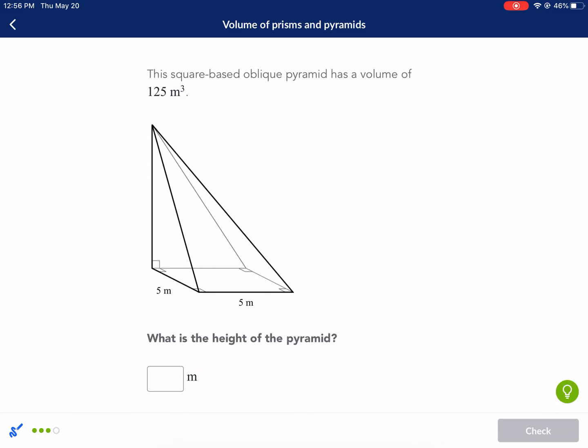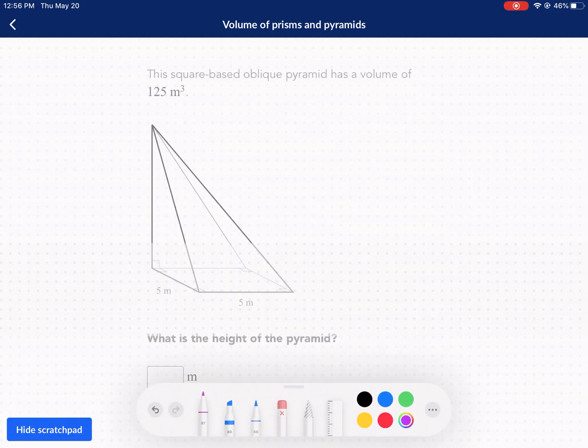The square-based oblique pyramid has a volume of 125 m cubed. What is the height of the pyramid? Very similar problem. Again, we need to know that volume equals one-third area of the base times the height. What do we know? We know the volume, 125 m cubed. That's equal to one-third. Area of the base, that we can figure out based on this. We have 5 by 5. We can find that area of the base we know is going to be 5 times 5, 25.